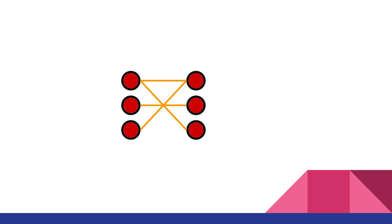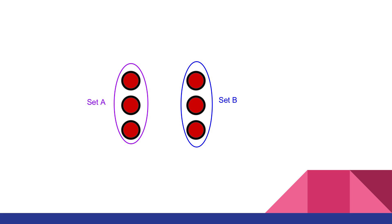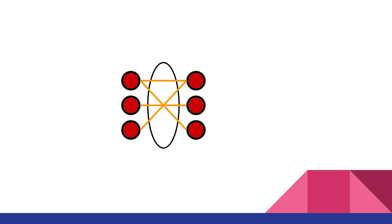Here is an example of a bipartite graph. The bipartite graph contains vertices. These vertices are divided into two disjoint sets, for example set A and set B. Circled are the edges in a bipartite graph. Each edge is a possible match between two vertices. However, an edge cannot match two vertices that are in the same set.